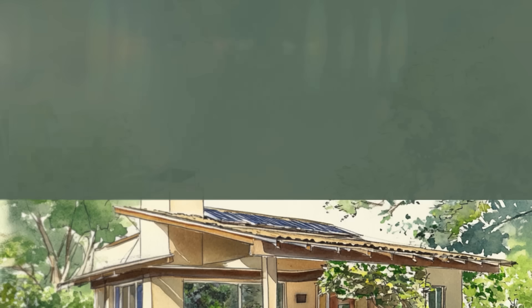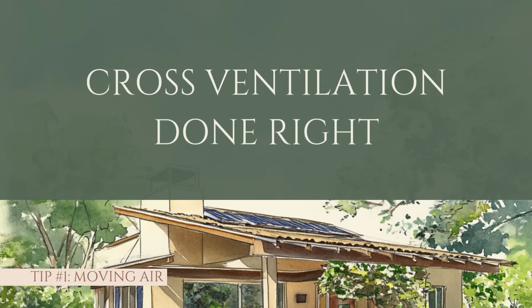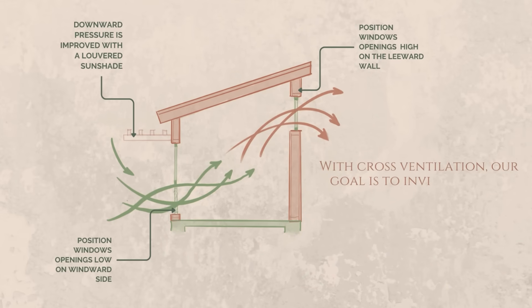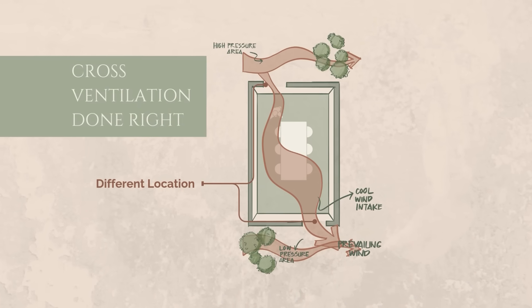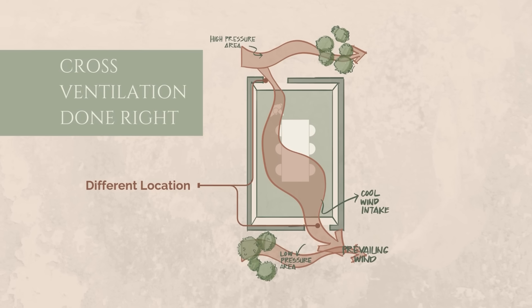Speaking of moving air through your home, let's talk about cross ventilation. Cross ventilation seems straightforward — just open windows on opposite sides of the room and the airflow will cool things down, right? Well, yes, but also no. With cross ventilation, our goal is to invite the air to move throughout the interior space, and design plays a role. If the windows are directly across from one another, the wind will just blow in a straight line and doesn't necessarily cool the whole room. Instead, try to stagger the location and size of the windows on opposite or adjacent walls — for example, open windows on a diagonal from one another to encourage air to move around the room.